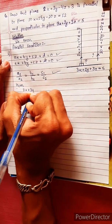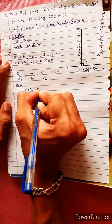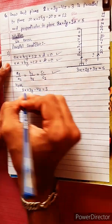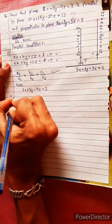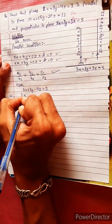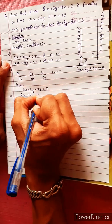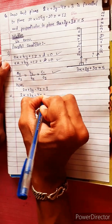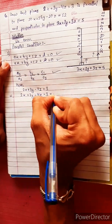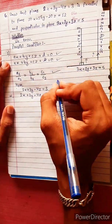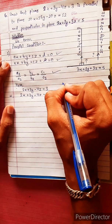The equation is 2X + 3Y minus 4Z equals 3. Rearranging this equation: 2X + 3Y minus 4Z minus 3 equals 0. This is the parallel equation.